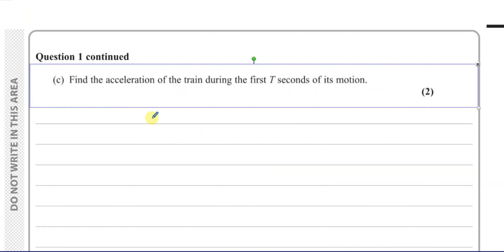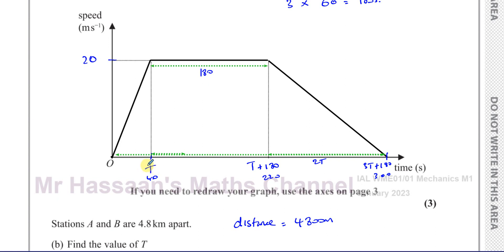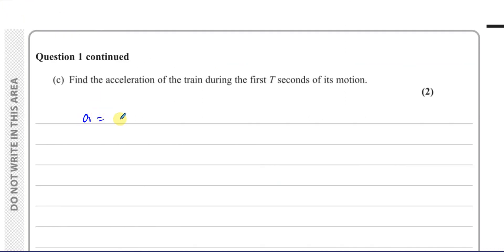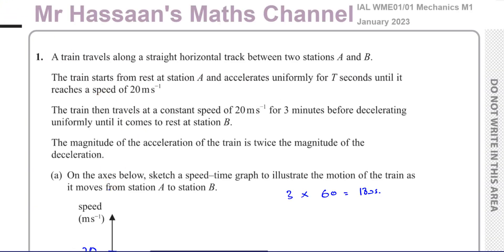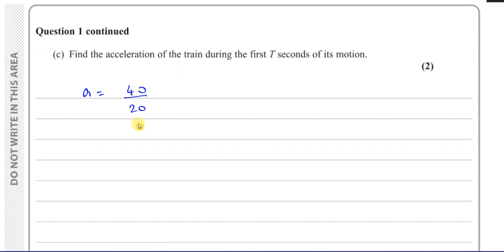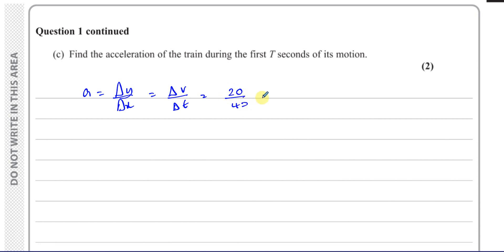For part c, we need to find the acceleration of the train during the first T seconds. We know T is 40. The acceleration is the gradient of the speed-time graph, which is the change in speed over the change in time — that is 20 divided by 40, which equals 0.5 meters per second squared.